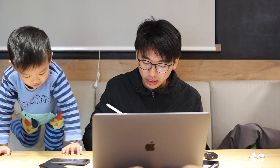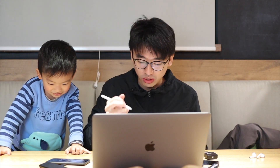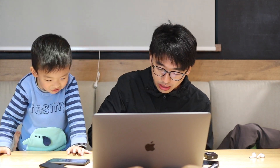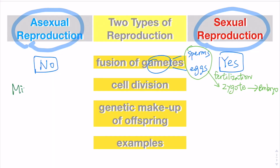For asexual reproduction, it involves only one single parent, and the single parent carries out a mitotic cell division to produce their offspring.